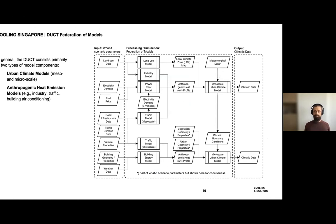The hub piece of the DUCT is the federation of models, where all the models reside. It's not one single model — it's a collection of models grouped into two categories: urban climate models, including mesoscale and microscale models, and anthropogenic heat emission models. For the latter, we have models simulating heat emissions by industry, traffic, and building air conditioning. This federation of models is specific to a digital urban climate twin. Every digital urban twin will have more than one model — a collection of specialized models for different things.